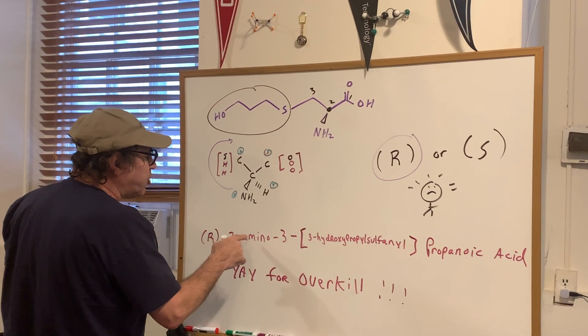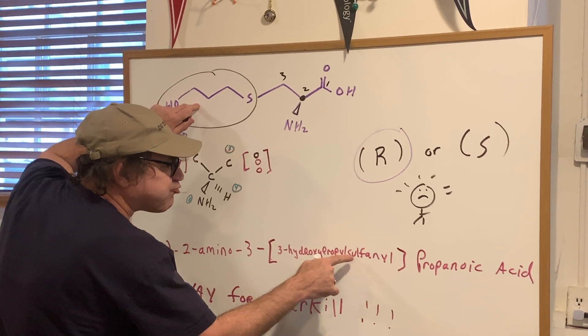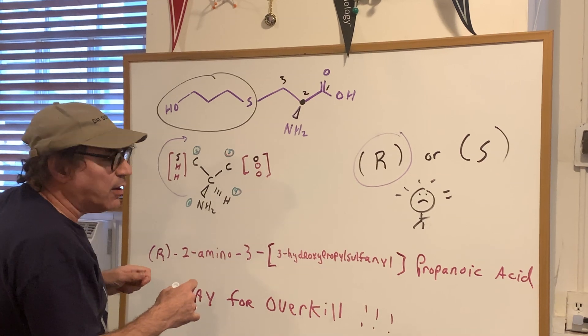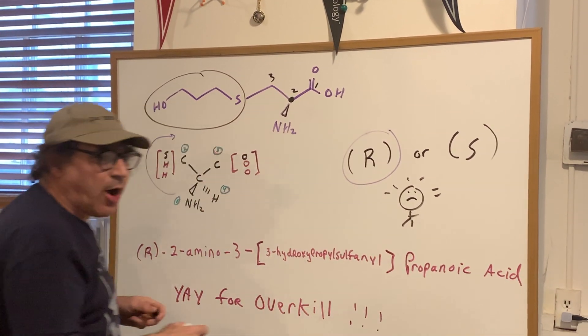So putting it all together, it would be R, 2-amino, 3-hydroxypropylsulfonyl, sulfonyl because of the S, propanoic acid.